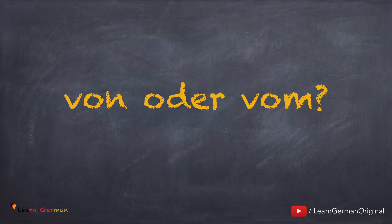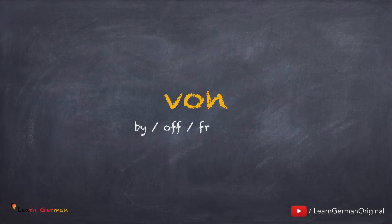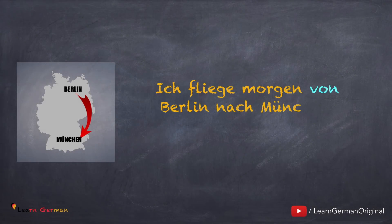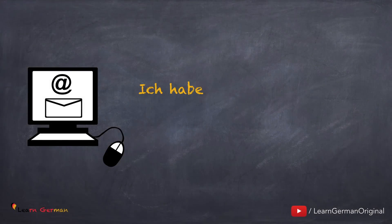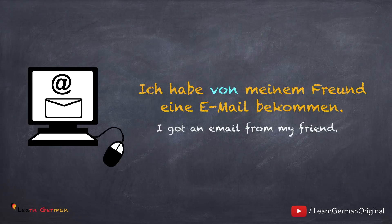Let's begin. VON, or VOM. The most important thing to remember here is that VON is a dative preposition. That means it will take a dative article. Now let's look at a few examples where you would use only the preposition VON. Since cities don't have an article, you will just use the preposition VON.